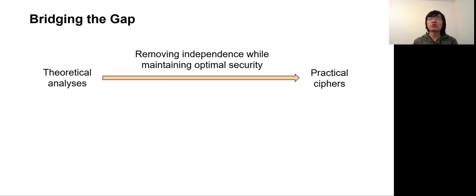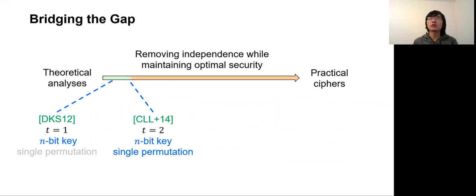Bridging this gap turns out to not be easy, since in the last decade, limited progress has been made towards removing independence assumptions while maintaining optimal security. The first result was by Dogma et al., who considered minimizing the even mental cipher, which is the one-round case for KAC — they reduced the master key length from 2n-bit to n-bit. Later, Chen et al. successfully minimized two-round KAC in both the key length and the number of permutations used.